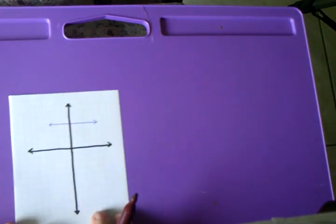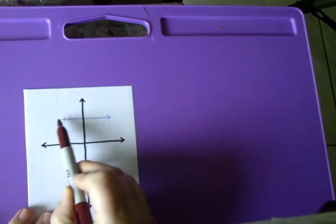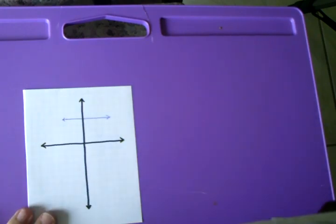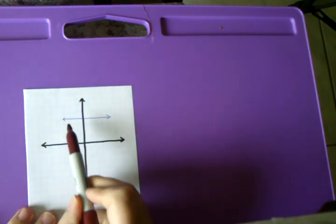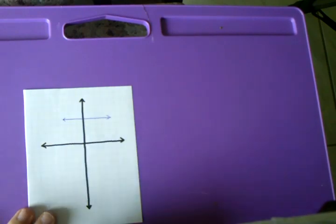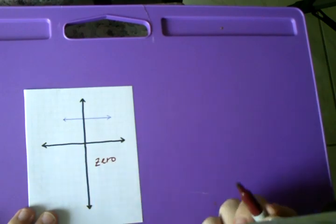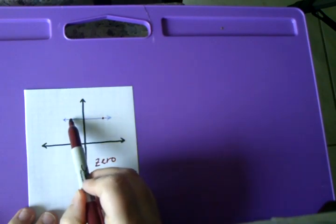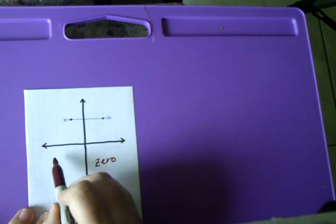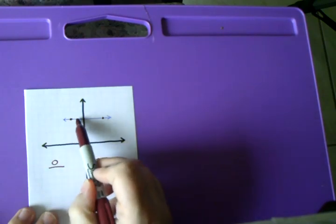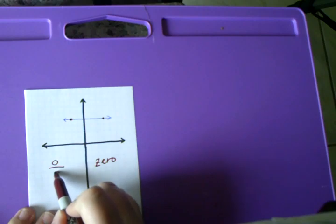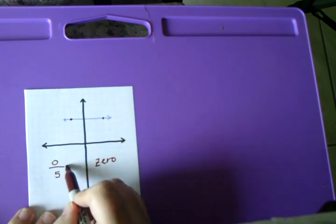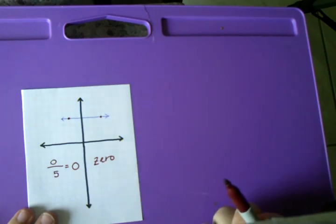There are two special lines that are a little bit different. First, a completely flat, straight horizontal line. Slope usually indicates how steep a line is, but if this line doesn't have any steepness to it, this one has a slope of zero. The rise is none because I'm already at level with the line, so my top number is zero, and zero divided by five is still zero. That is why the slope of this line is zero.